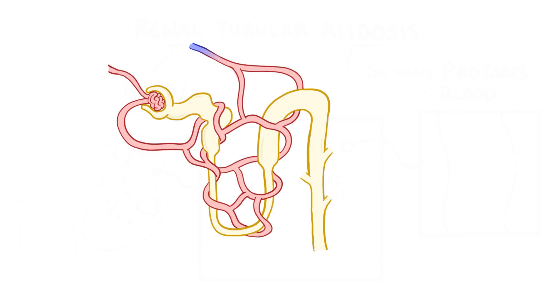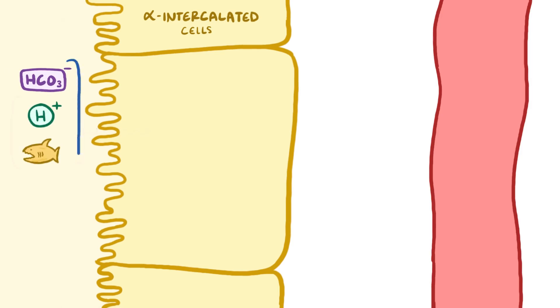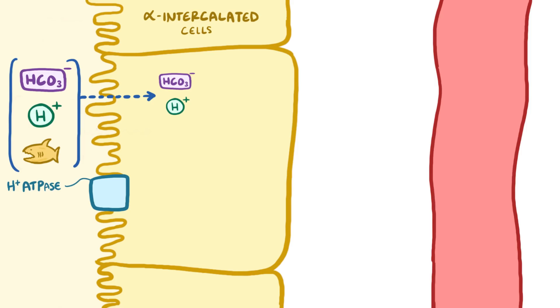Now we're going to shift over to the distal tubule and collecting duct. One type of cell these are lined with are the alpha-intercalated cells. Like the brush border cells, the alpha-intercalated cells move bicarbonate and hydrogen from the tubule into the cell using carbonic anhydrase. The alpha-intercalated cells have two major ways to get rid of that hydrogen that crosses the apical surface. First, they have a hydrogen ATPase, which simply pushes hydrogen into the tubule.